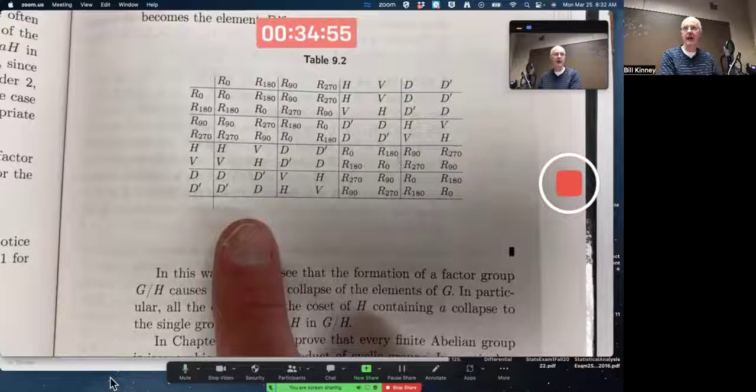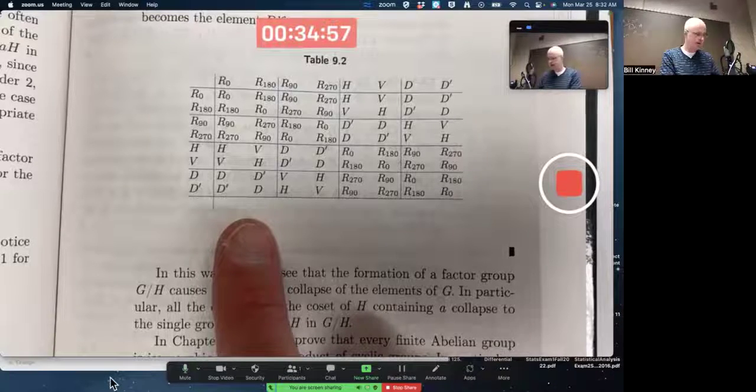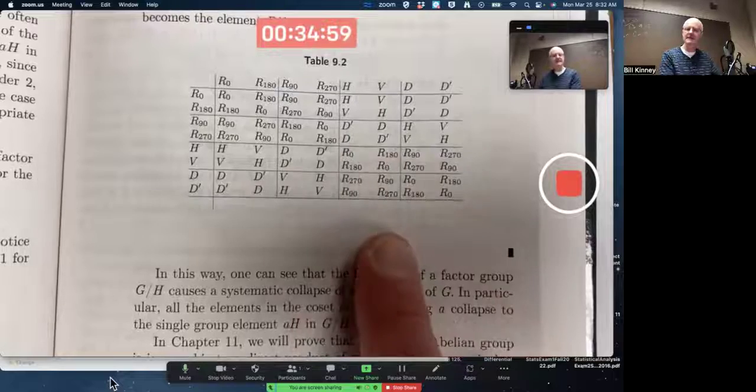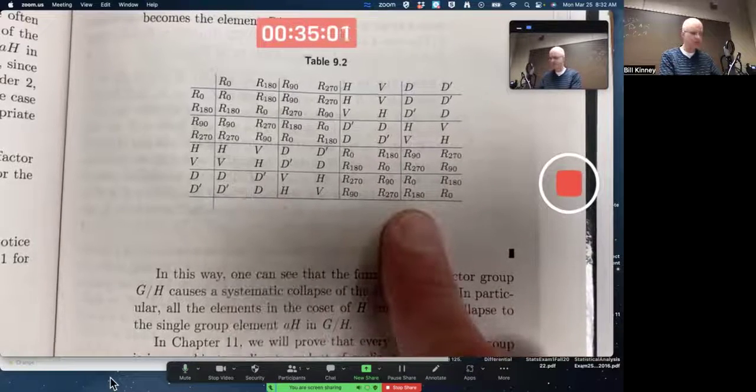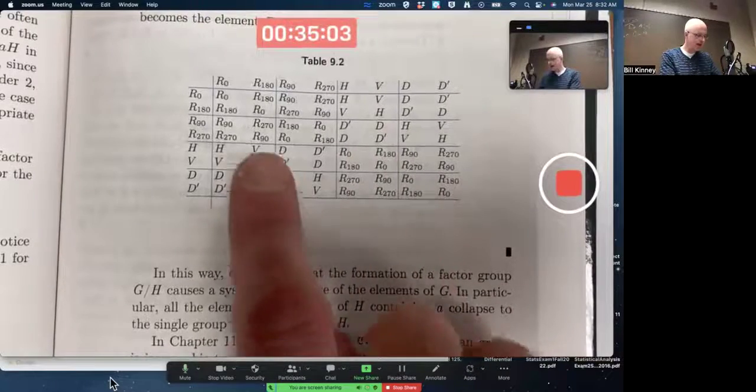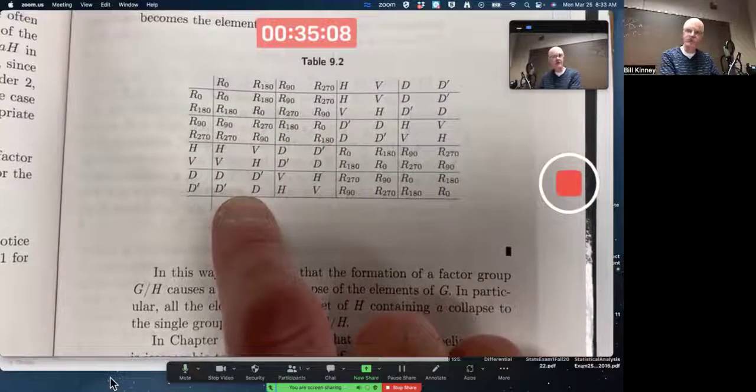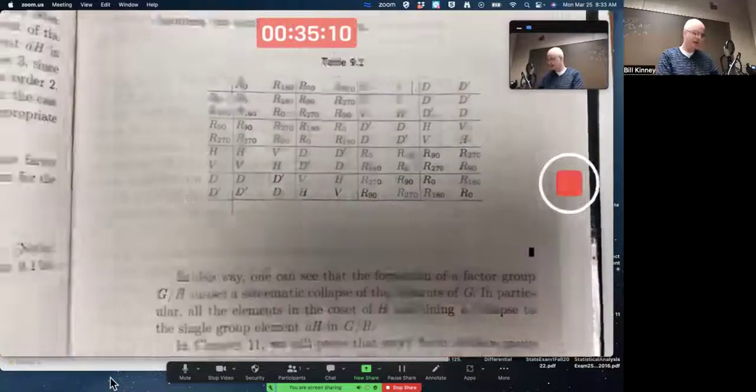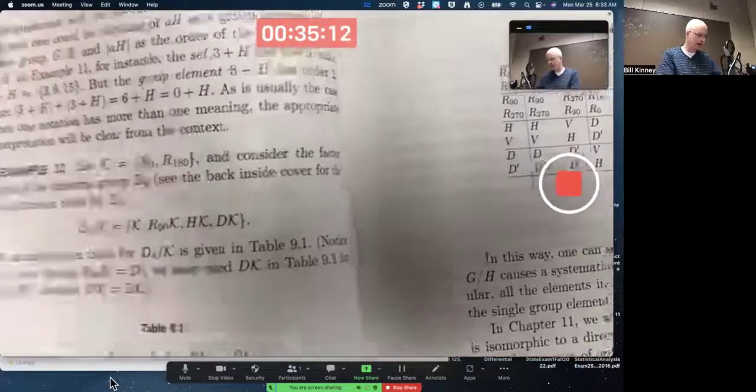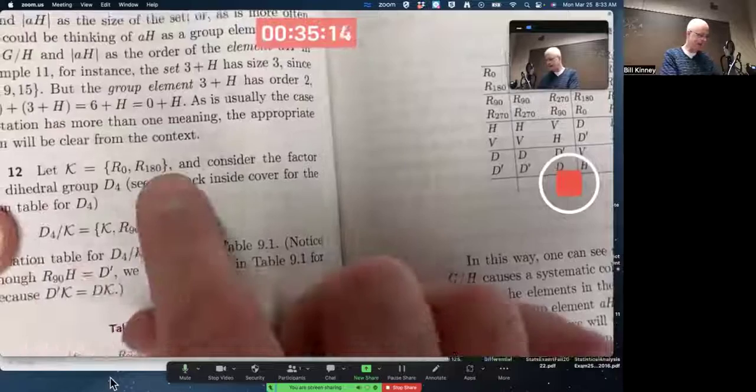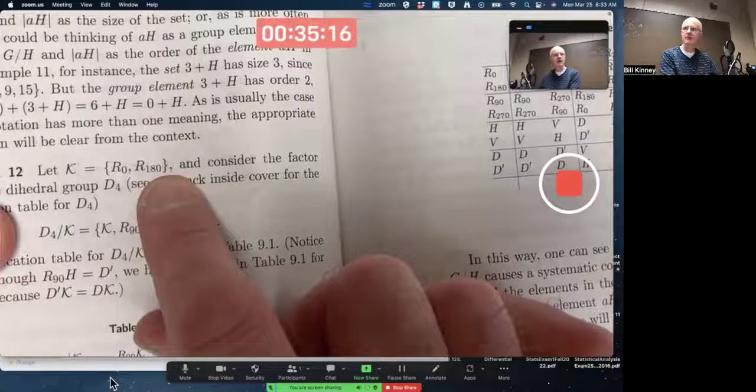dihedral group of order eight symmetries of a square, broken down into pieces in these boxes here in such a way that each box represents a coset of the factor group of D4 by K, where K is this subgroup, R0 and R180.